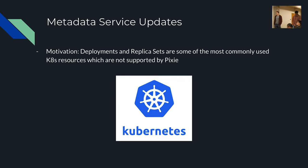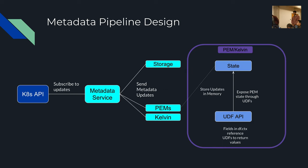I also worked on some metadata service updates. The motivation is that deployments and replica sets are some of the most common resources people use in their Kubernetes deployments. Since we didn't support them yet, before I added them, users weren't able to see the state of their deployments and didn't have dashboards to see that. I'll give a quick overview of how the metadata service works. The Kubernetes API can generate different events — for example, a pod update or a deployment update — and our service can subscribe to those updates and get them whenever something changes.